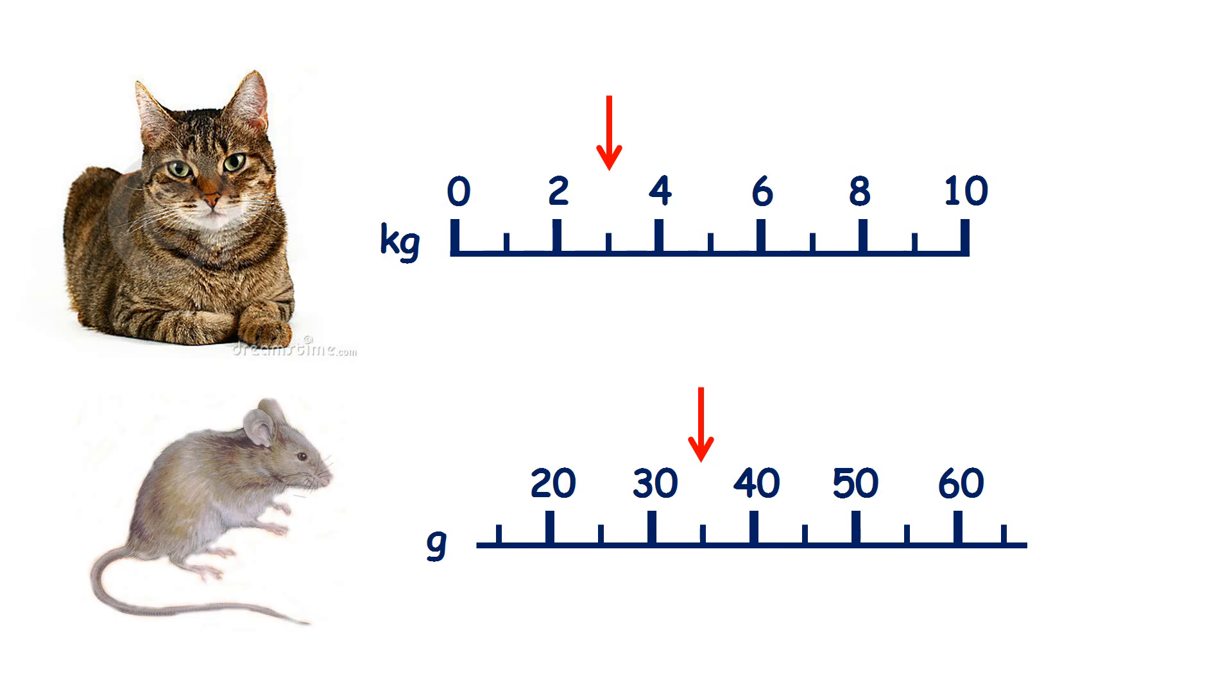So we need to know how to read a range of scales which can tell us how much something weighs. So how much does the cat weigh? Well, our arrow is pointing between 2 and 4, and the number between 2 and 4 is 3, so the cat weighs 3 kilograms.